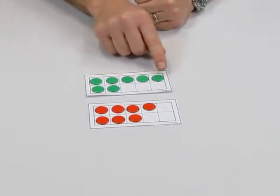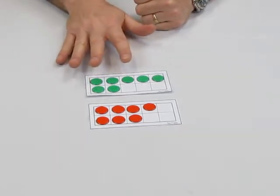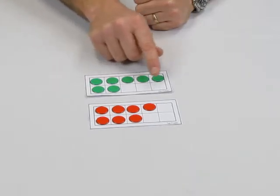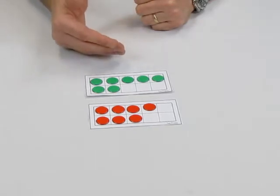We're focusing on the fiveness here, and then you can see there's two more, so that gives me seven. Also, I'd like to focus children on the fact that there are three empty spaces. So seven and what makes 10? It starts to frame and develop their thinking.